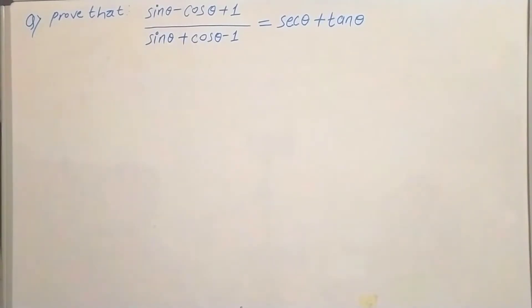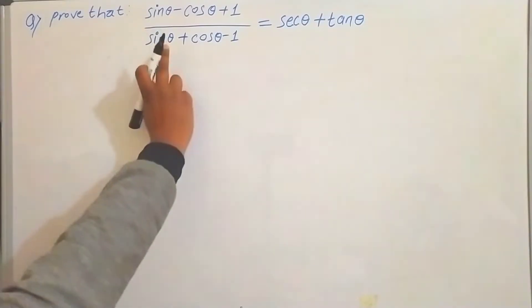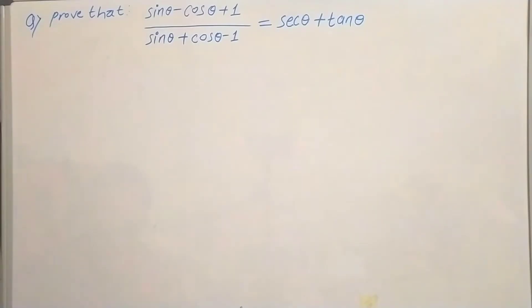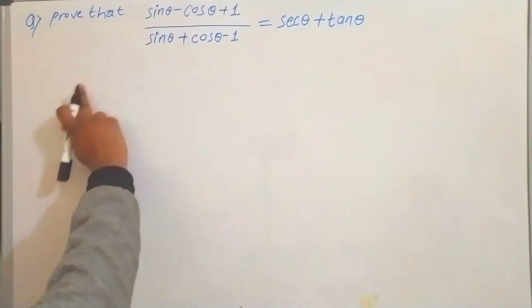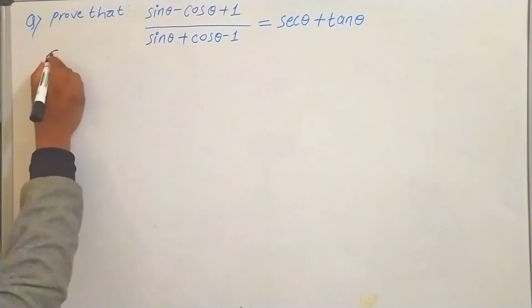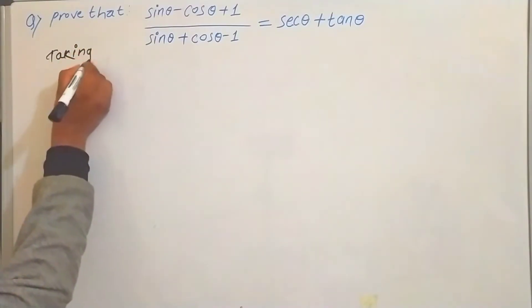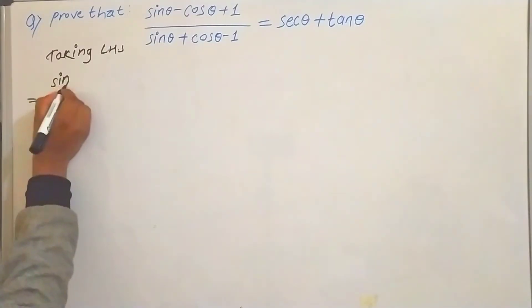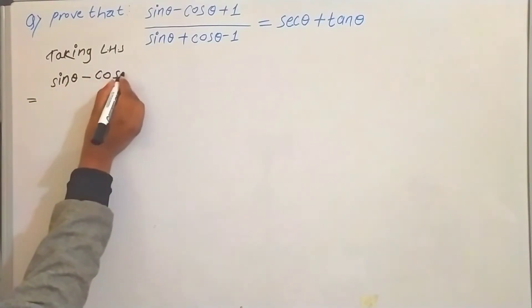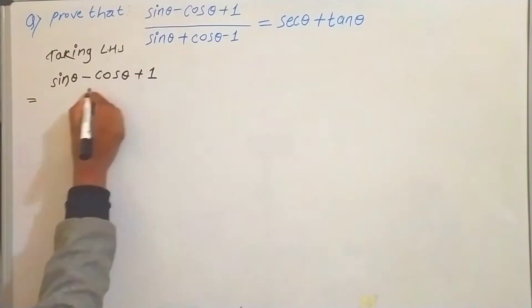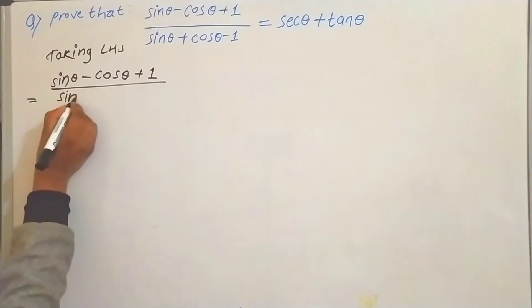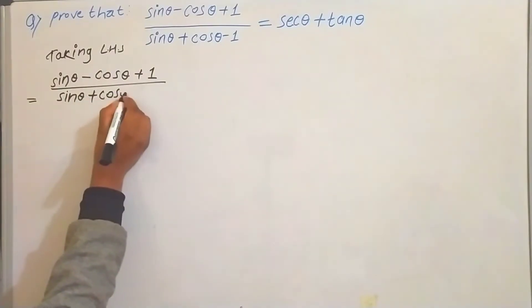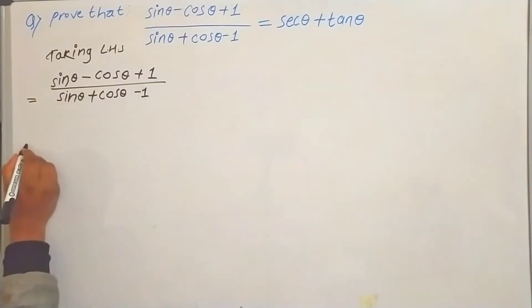We have the next question: (sin θ − cos θ + 1) upon (sin θ + cos θ − 1). This is the easy method. I will prove it by taking the LHS.